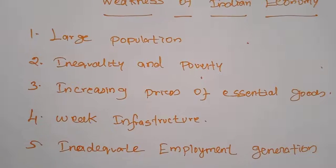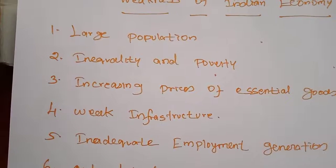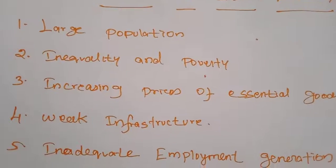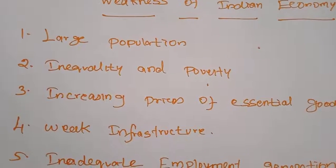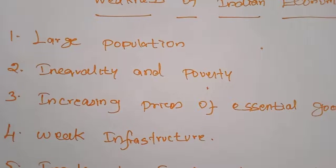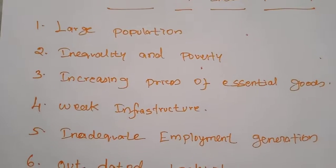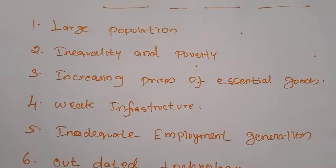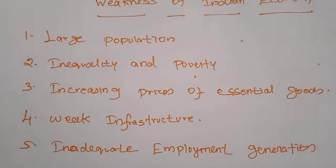The poor people always become poorer and the rich people always become richer. The proportion of income and assets owned by the top 10% of Indians keeps increasing, while most people remain the poorest. This has led to an increase in poverty level in society, and still a higher percentage of individuals are living below the poverty line. As a result of unequal distribution, the rich become richer and the poor become poorer.